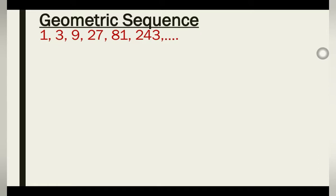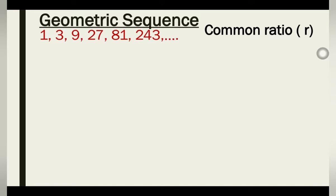We are starting with the geometric sequence. We have some nice numbers: 1, 3, 9, 27, 81, 243 — that indicates an infinite geometric sequence, so we can keep adding more terms. The clue to identifying a geometric sequence is to divide each term by its preceding term and realize that the ratio between those two things is constant throughout — that is, the common ratio is constant throughout two consecutive terms.